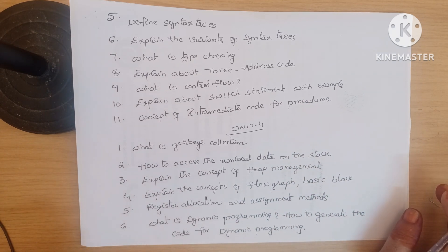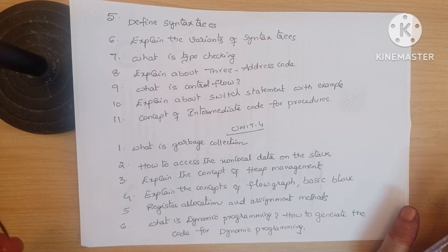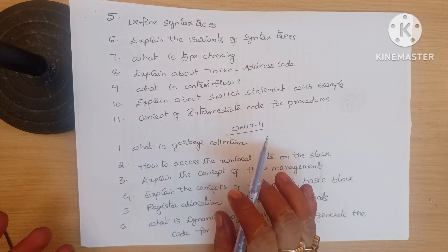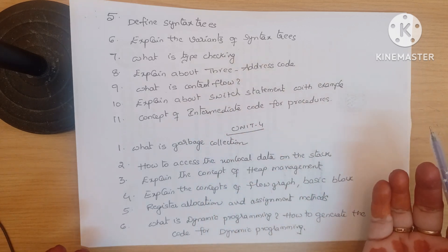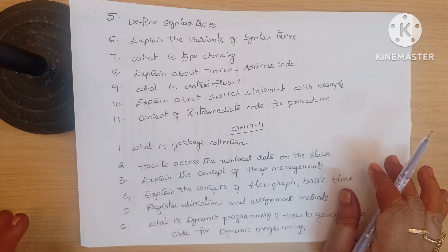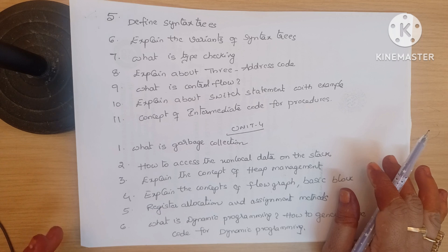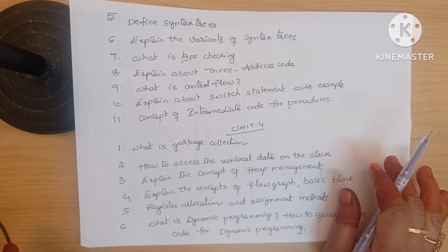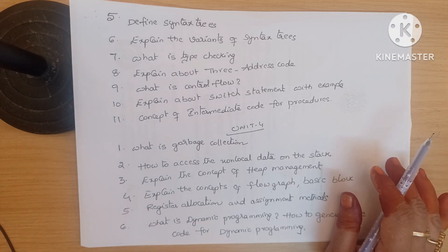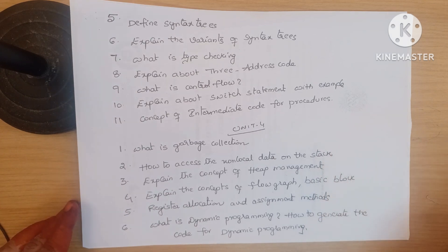I've already explained many videos. There's no strict split between short and long answers — you have to read the concept. For example, if you learn the concept of syntax tree, they may ask the definition or variants. For a short answer, just write the definition. For an essay-type question, write what a syntax tree is, where it's used, different types, examples — everything.